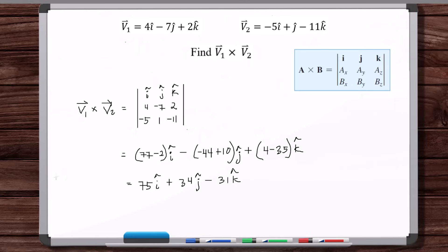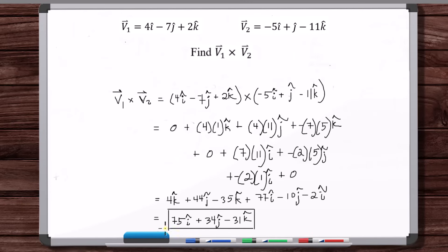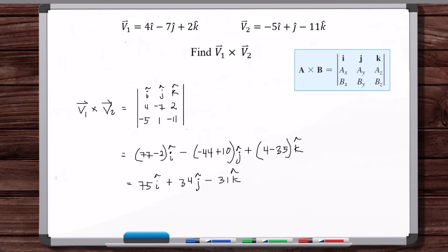And that's the same result we got using the first method. The determinant method goes pretty quickly, but I think the first method is more intuitive — you really understand the intuition behind the cross product. I feel like I end up forgetting the determinant method, whereas the manual distribution method sticks more naturally. Whatever way works for you is fine — you get the right answer using either method.